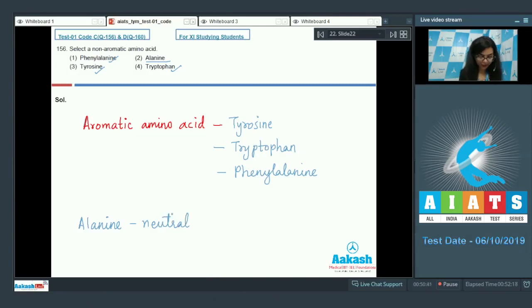It has one amino group and one carboxylic group, and also it does not show any cyclic structure. Thus the correct answer here would be option number two, alanine.